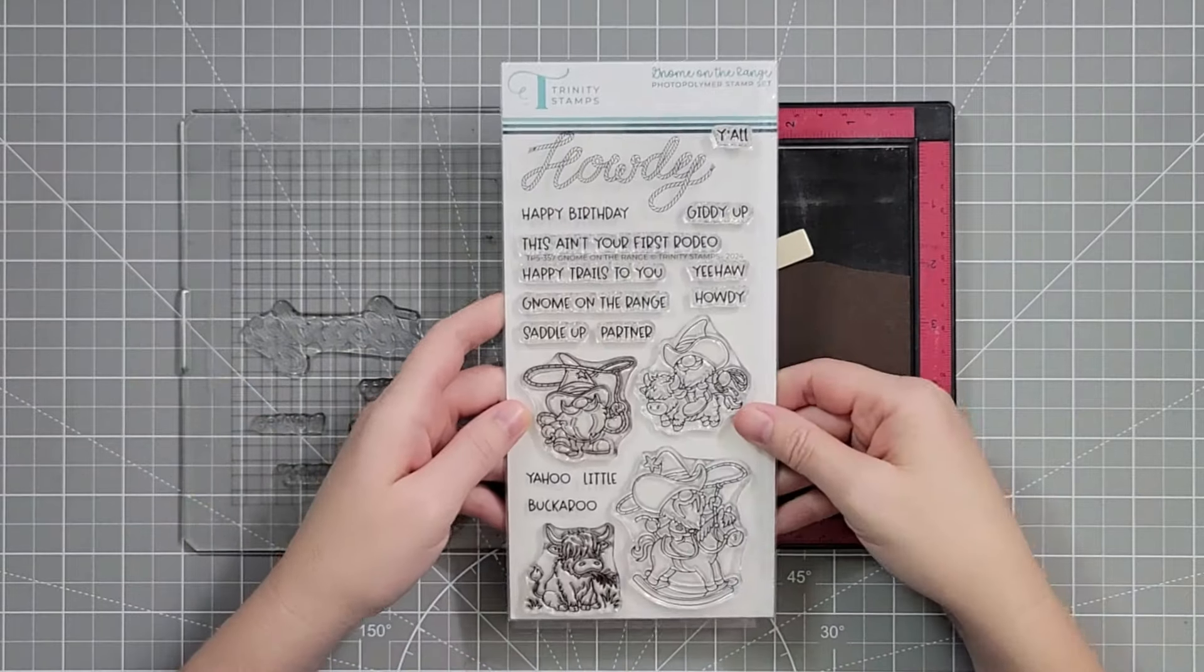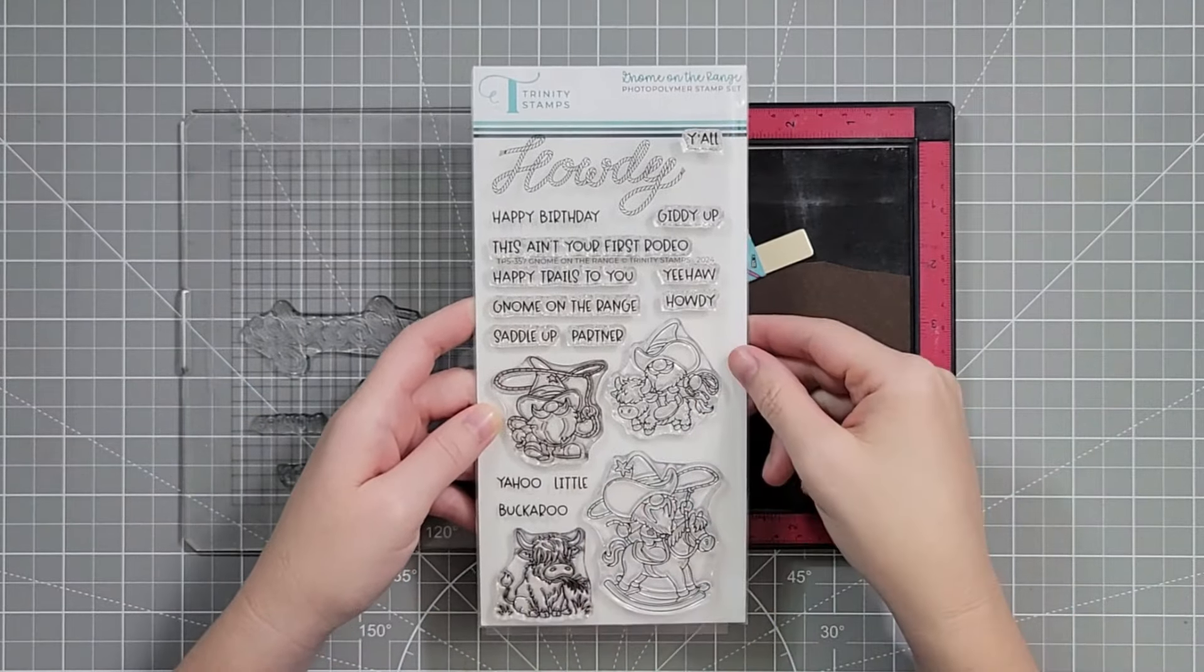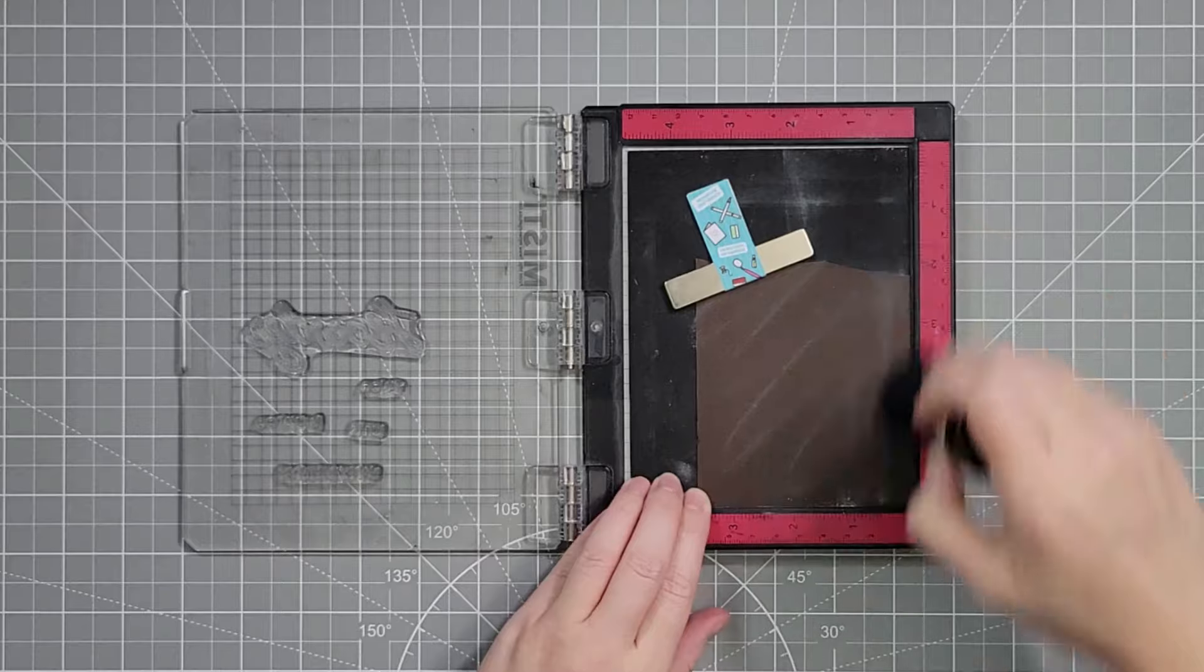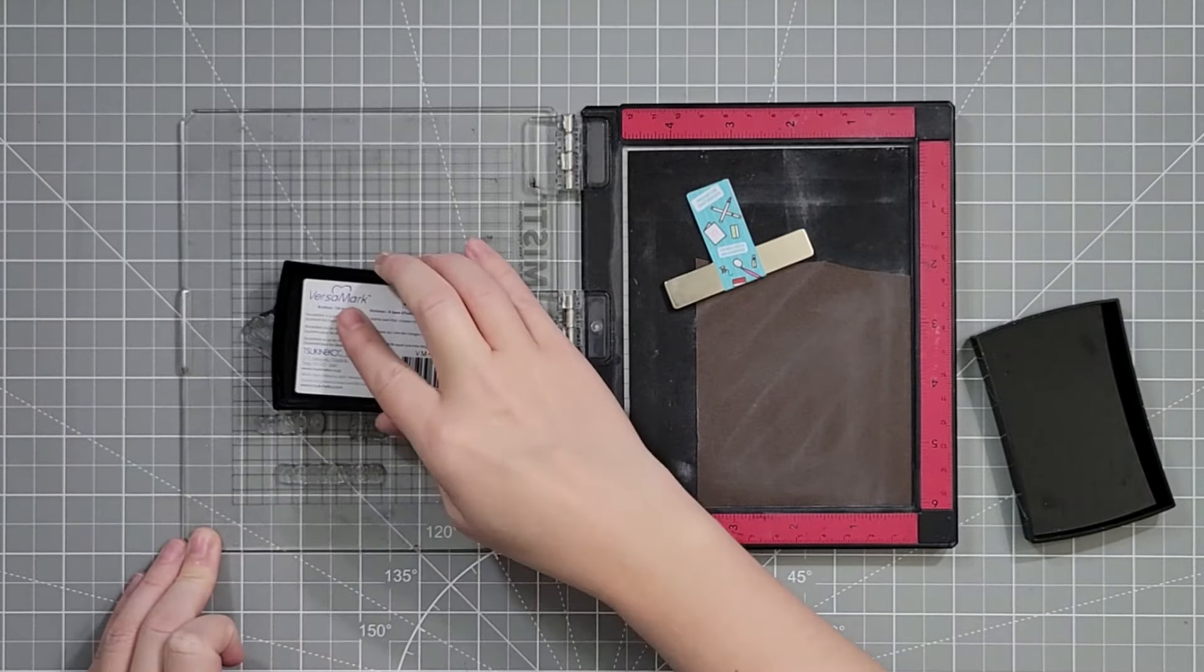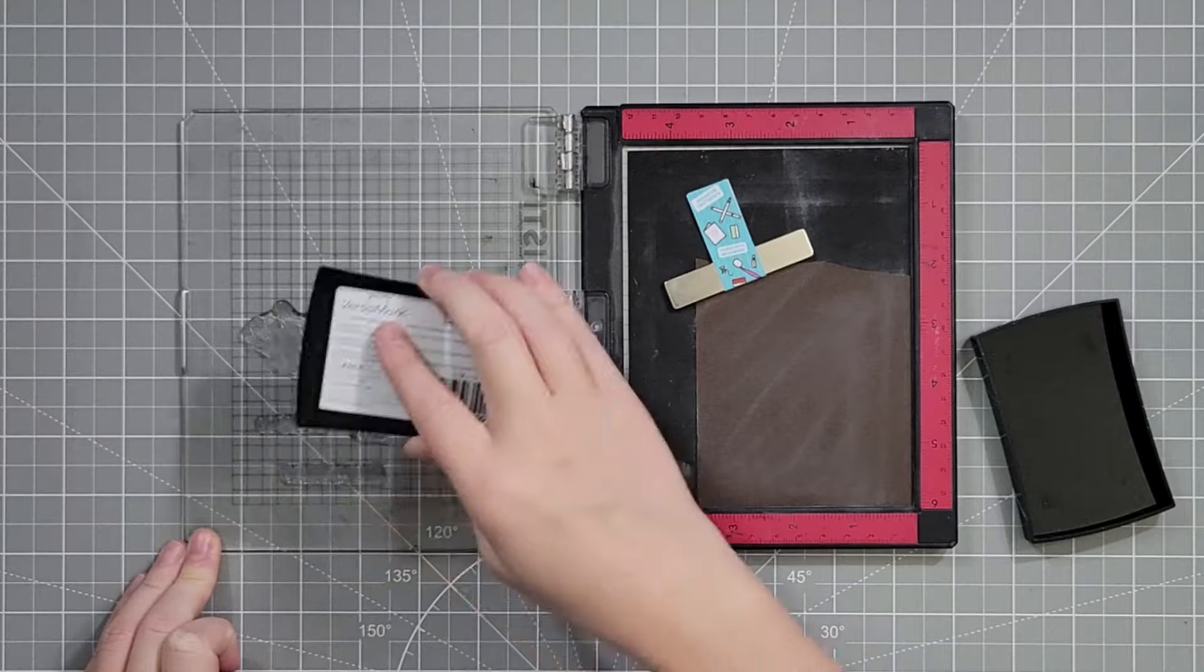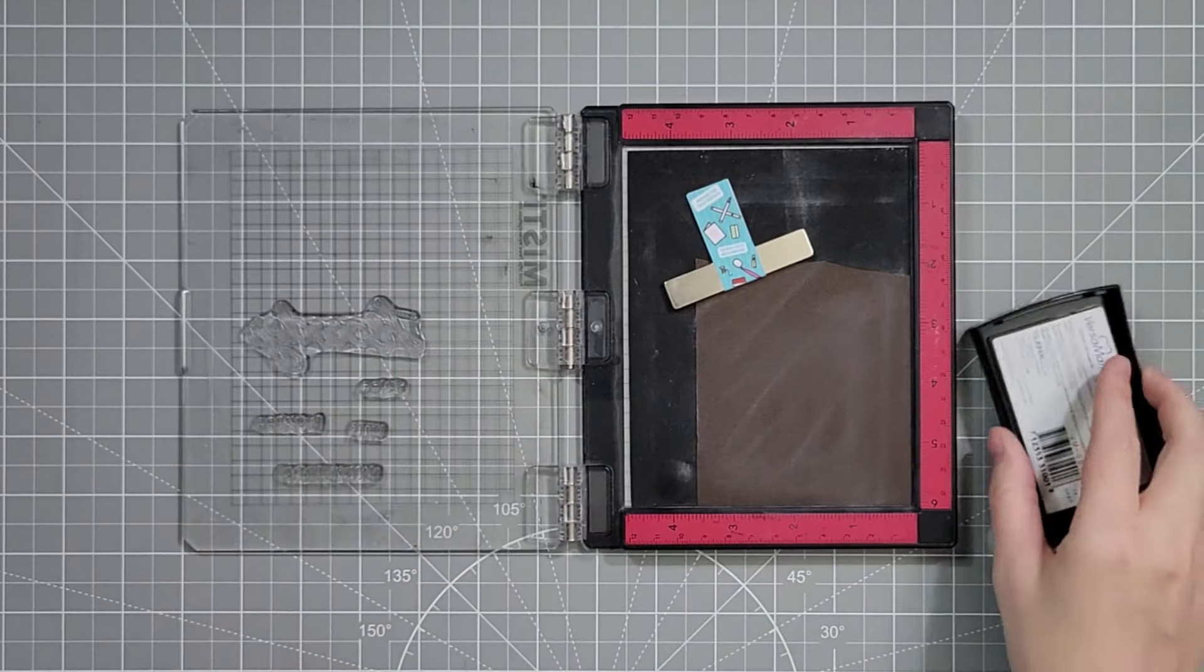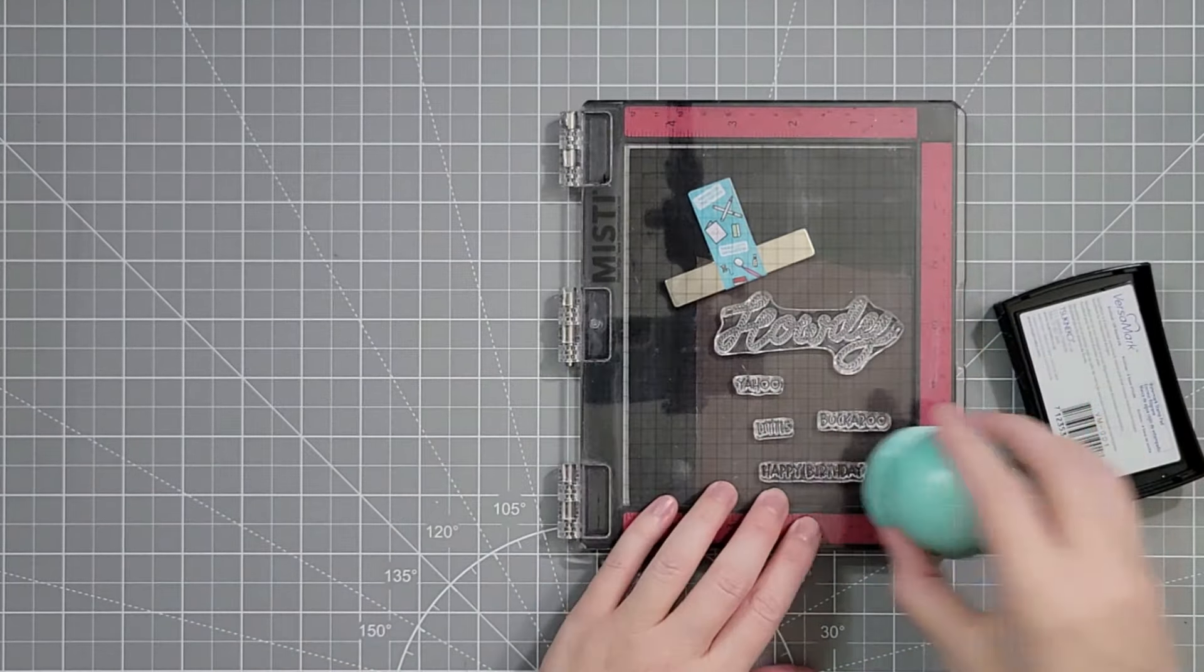I'm using this big Howdy. It is like a rope spelling out the word howdy, along with Happy Birthday, Yahoo, Little Buckaroo.